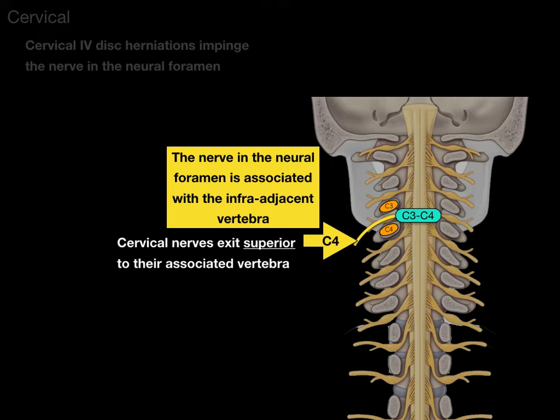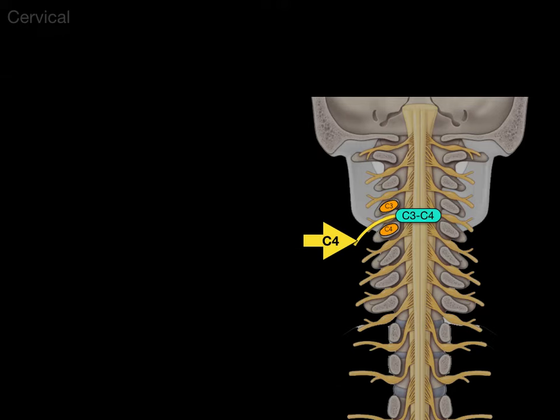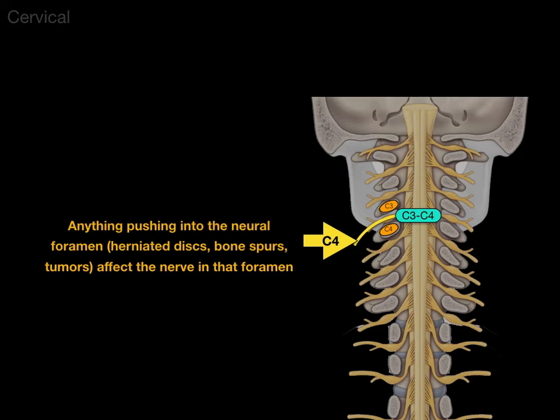Another way of saying it is: cervical nerves exit superior to their associated vertebra. Anything pushing into the neural foramen — whether it's a herniated disc, a bone spur, a tumor, or whatnot — affects the nerve in that foramen in the cervical region.